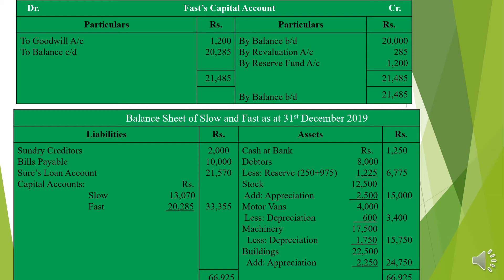Fast's capital account: opening balance 20,000, revaluation profit 285, reserve 1,200, goodwill debited 1,200 — balance 20,285. Now the balance sheet: cash/bank 1,250; debtors 8,000 less reserve 1,225 (existing 250 + new 975) = net debtors 6,775; stock 12,500 plus appreciation 2,500 = 15,000; motor van 4,000 less depreciation 600 = 3,400; machinery 17,500 less depreciation 1,750 = 15,750; building 22,500 plus appreciation 2,250 = 24,750. Total assets: 66,925.